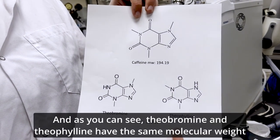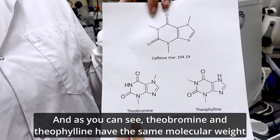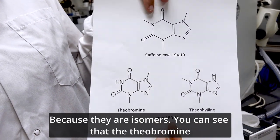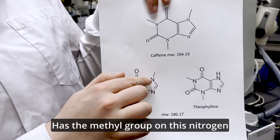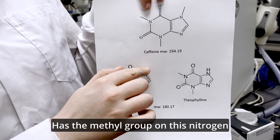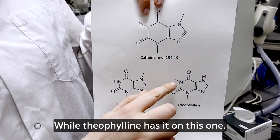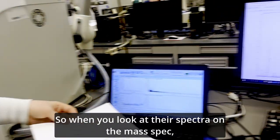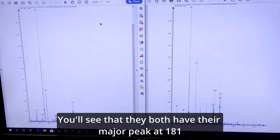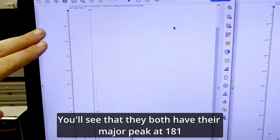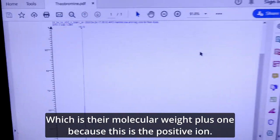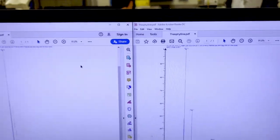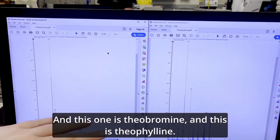And as you can see, theobromine and theophylline have the same molecular weight because they're isomers. You can see that the theobromine has the methyl group on this nitrogen, while theophylline has it on this one, but they still have the same molecular weight. So when you look at their spectra on the mass spec, you'll see that they both have their major peak at 181, which is their molecular weight plus one because it's the positive ion.